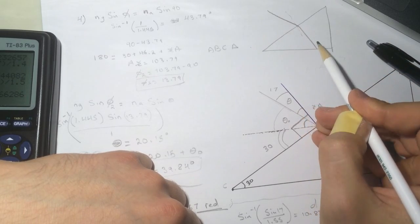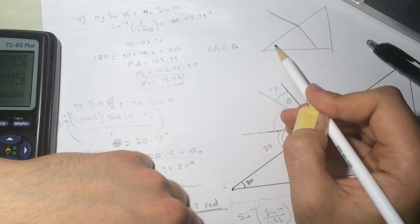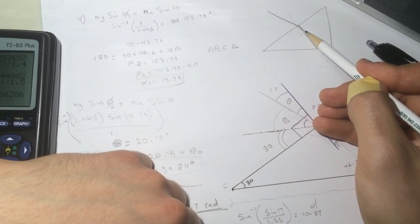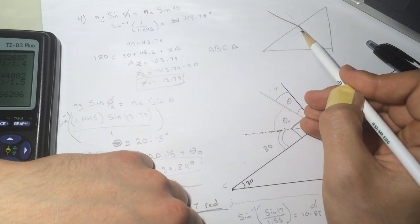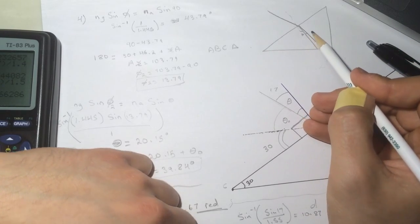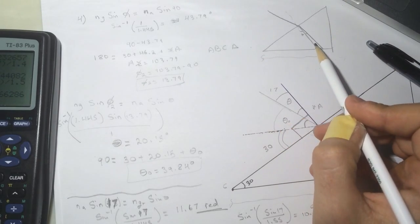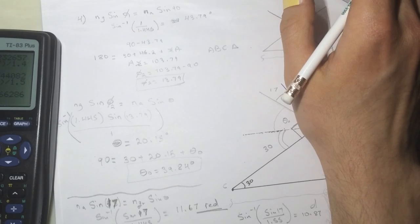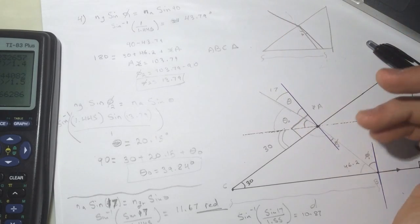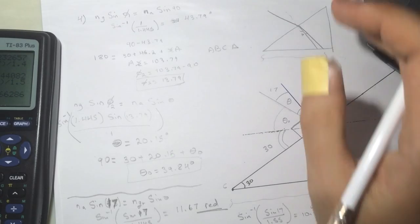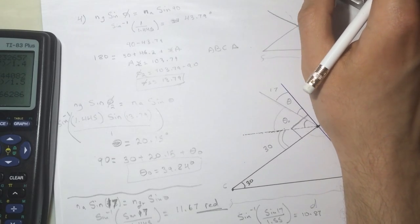It's gonna go like this, and then the red will go like this because this was like 10 and this was like 11. That's why the D will be bigger. The D for the red will be bigger than the D for the violet. Okay, let's do this last question.